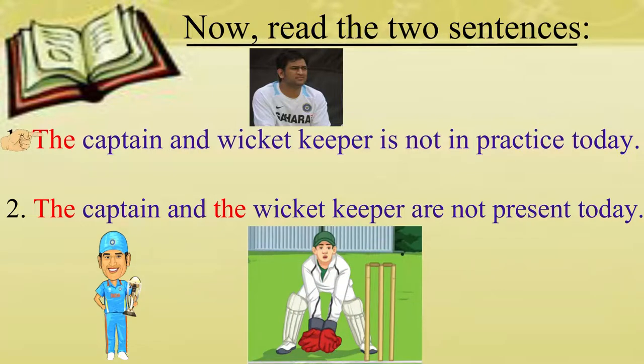Here, the first sentence clearly indicates the same person who is both a captain and wicket keeper. But the repetition of the article in the second sentence suggests two different persons. One is a captain and the other a wicket keeper.